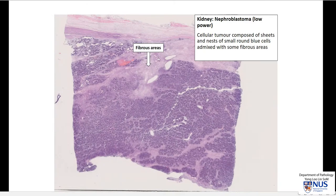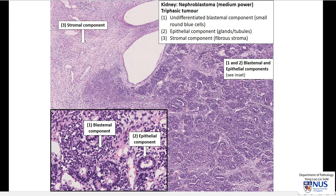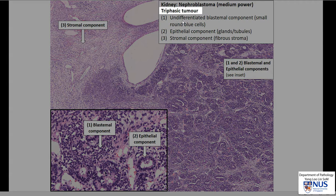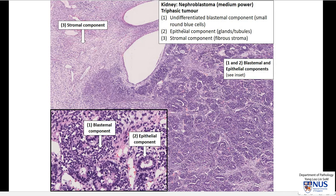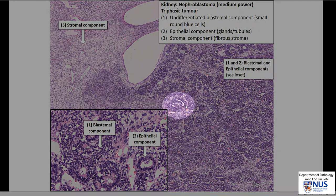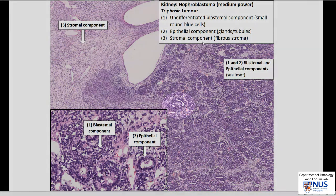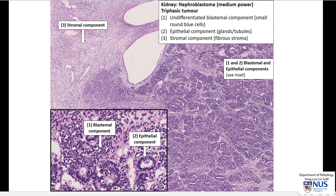There are also some pinker areas which may point to other tissue types. Looking at this at higher magnification, this is a triphasic tumor. The first component is the blastemal component, which is literally the small round blue cells — there is no real architecture, just sheets of small round blue cells. The second component is the epithelial component, which may form glands or tubules, as seen here. It also has a stromal component where the cells are a lot more elongated or spindly. So this is an example of a triphasic nephroblastoma.